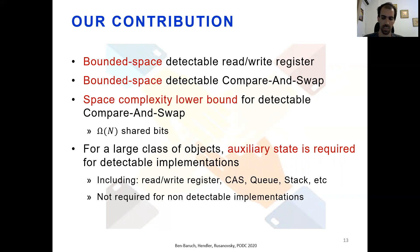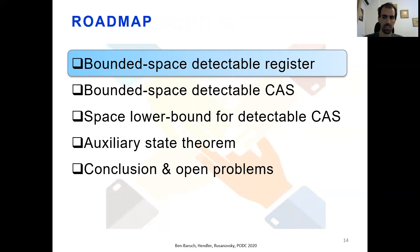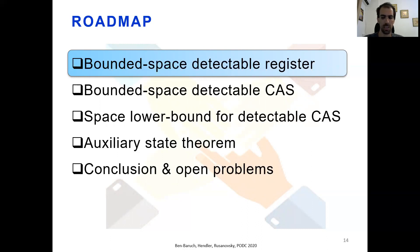We emphasize that auxiliary state is required in order to support detectability; therefore, recoverability by itself does not require auxiliary state. The rest of the talk is structured as follows: we start with the bounded space detectable algorithms for both register and compare-and-swap, proceed to the space lower bound of detectable compare-and-swap, then present the auxiliary state theorem, and conclude with a summary and some open problems. For simplicity of presentation, this talk considers the system-wide crash model in which all processes fail together. The paper also covers the individual crash model in which processes can crash and recover independently.